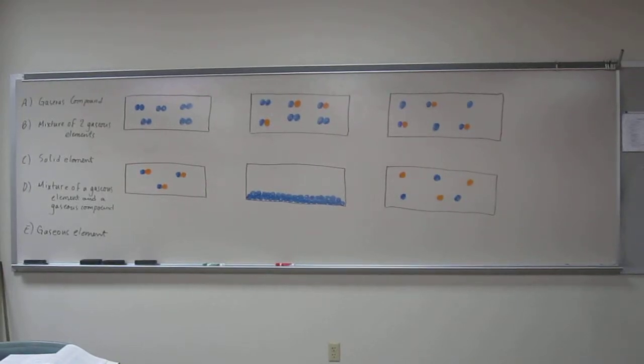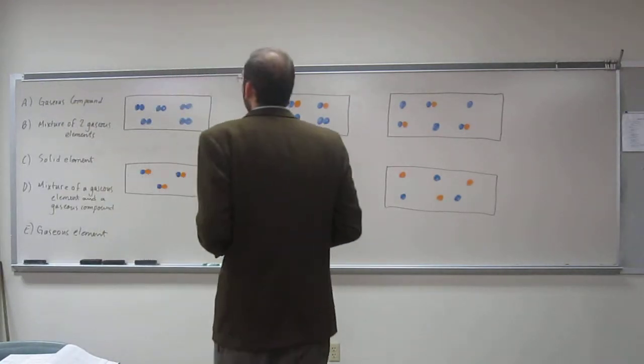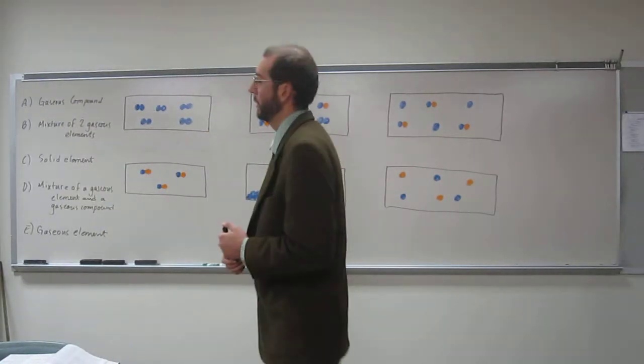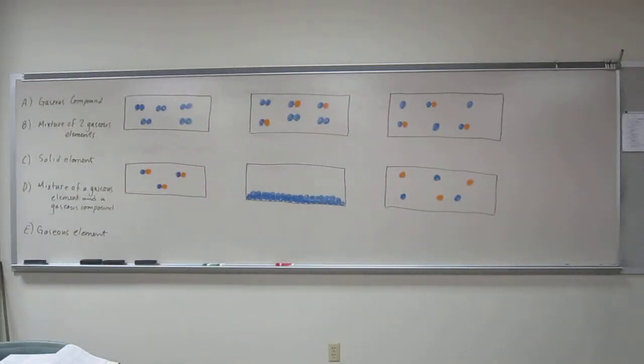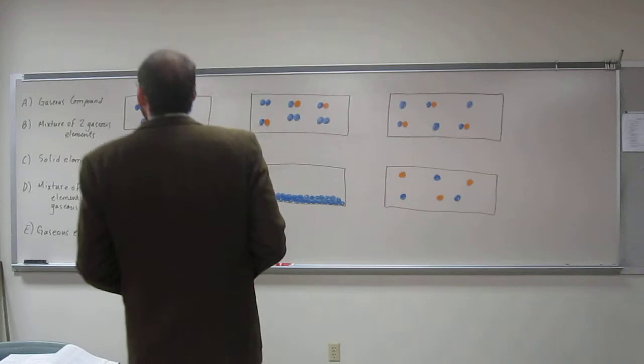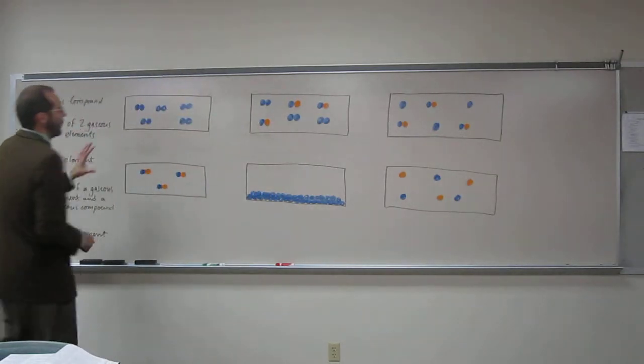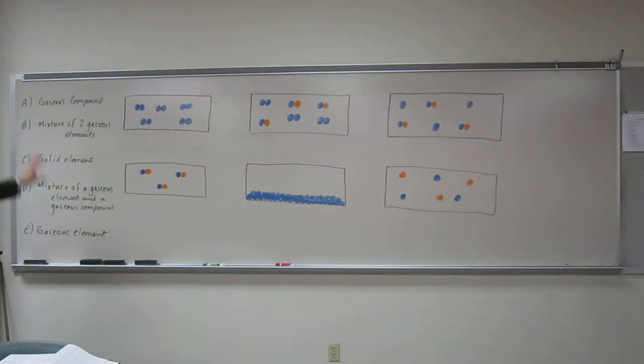So let's just go over this picture problem. I know these ones are semi-annoying sometimes, but it's good to every once in a while do them. So this question asks, label each picture as one of these choices. Obviously since we have five choices and six pictures, one of the choices can be used more than once, or at least one.